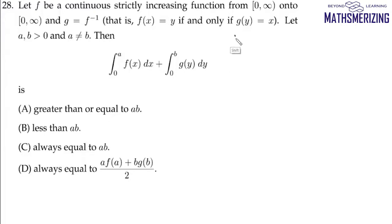We'll take a graph. This function f(x) is continuous and strictly increasing, and it's an onto function from 0 to infinity. Suppose that is the graph of y = f(x).